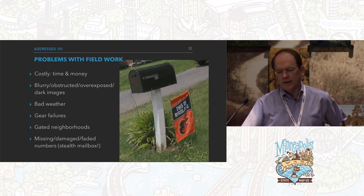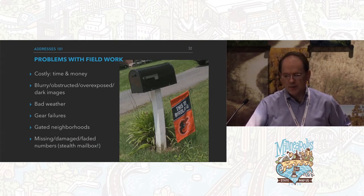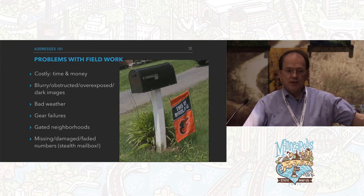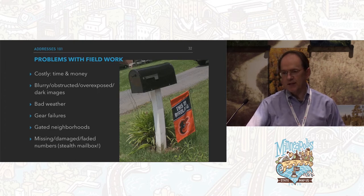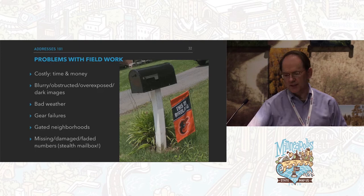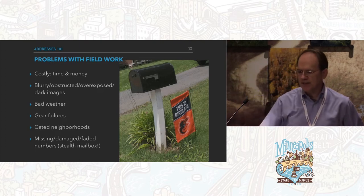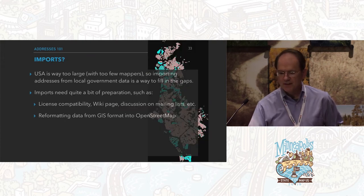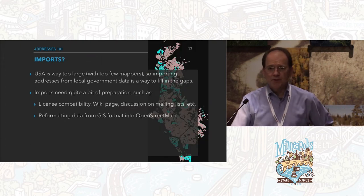Problems with field work: it's costly in time and money. You get blurry images, overexposed images, obstructed views. You get people parking their cars in front of the mailbox because the post office has already been there for the day. Bad weather, gear failures, running out of battery. Gated neighborhoods, and of course missing, damaged, or faded numbers. In this case we have a stealth mailbox that is entirely black — I have photos of all three sides, and all three sides are black.